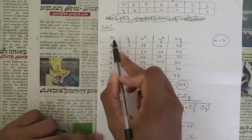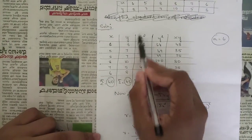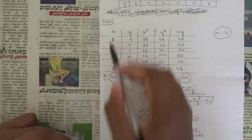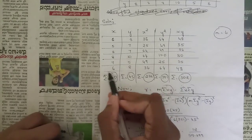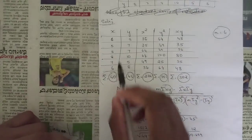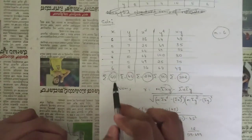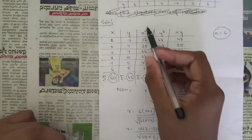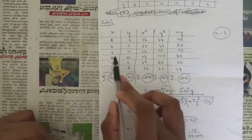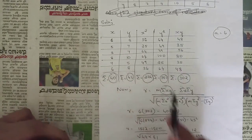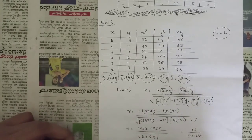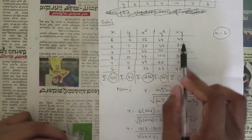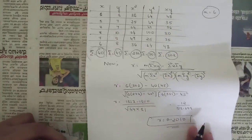Write x, y, x², y², and xy in the tabular column and take the summations. Summation of x = 40, summation of y = 45, summation of x² = 274, summation of y² = 351, and summation of xy = 302.